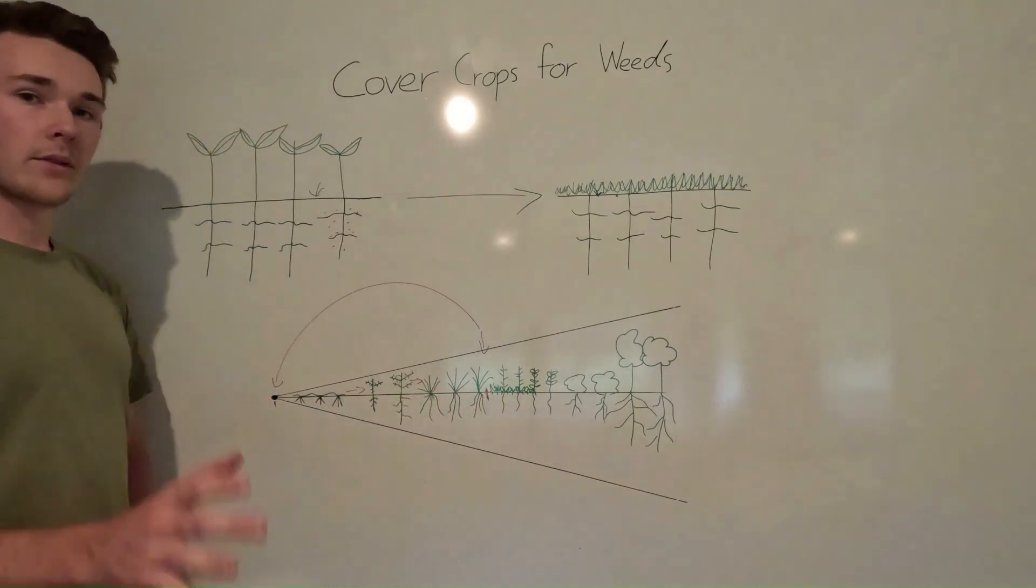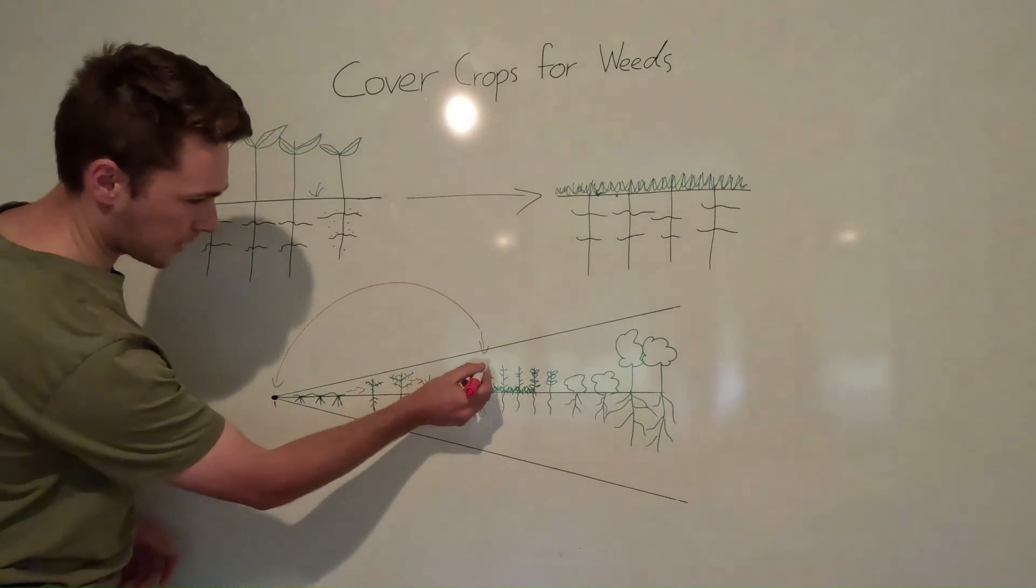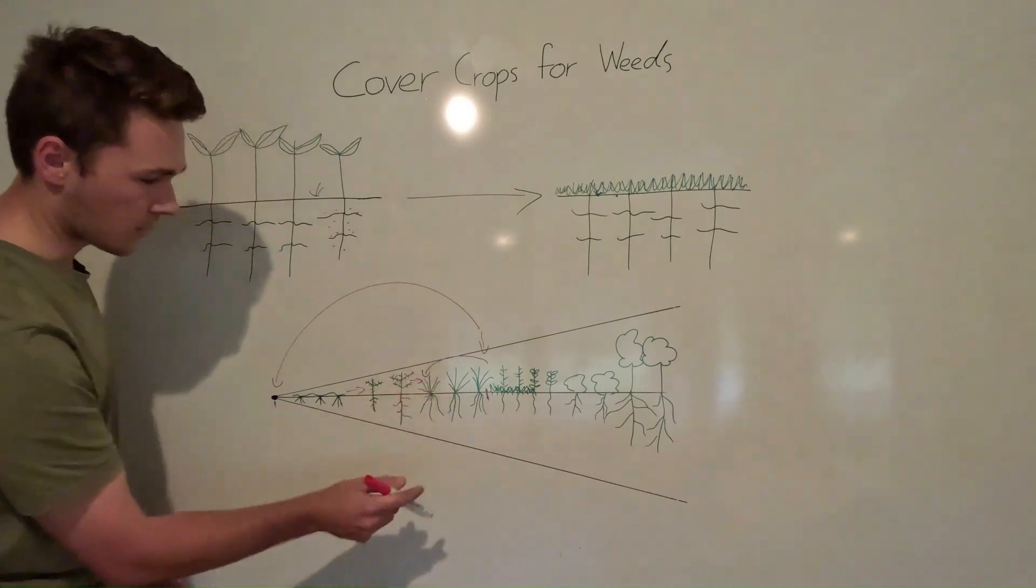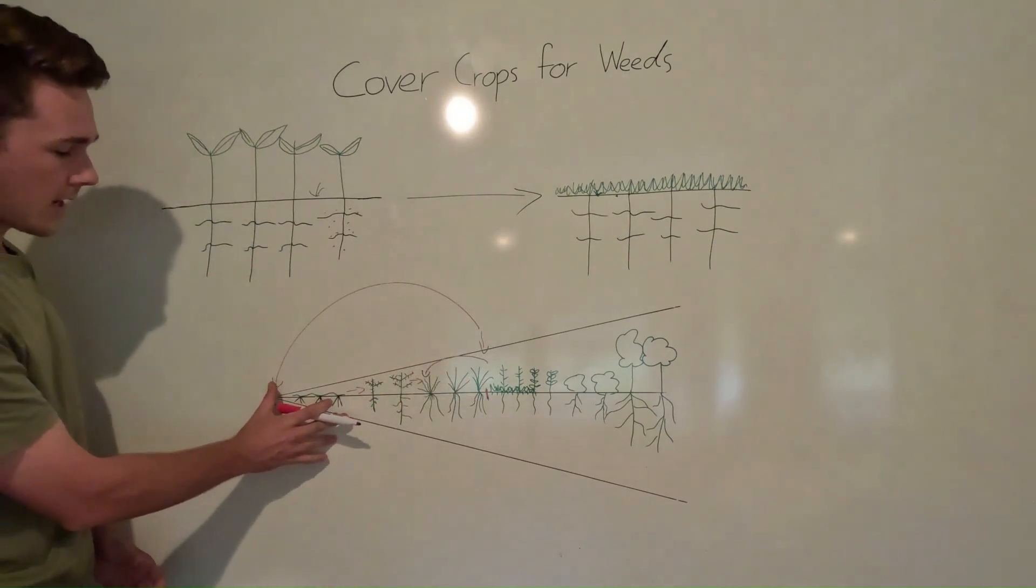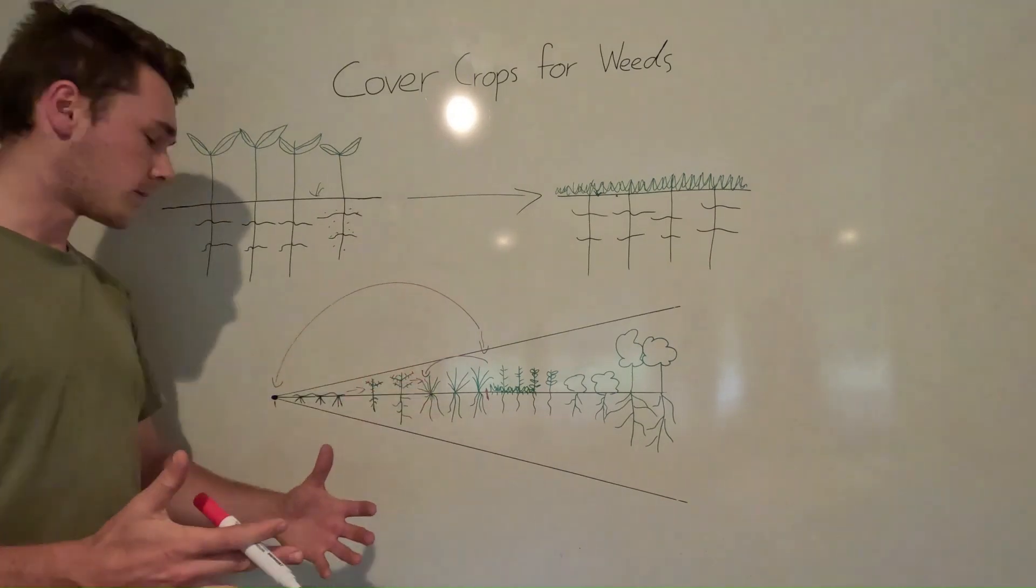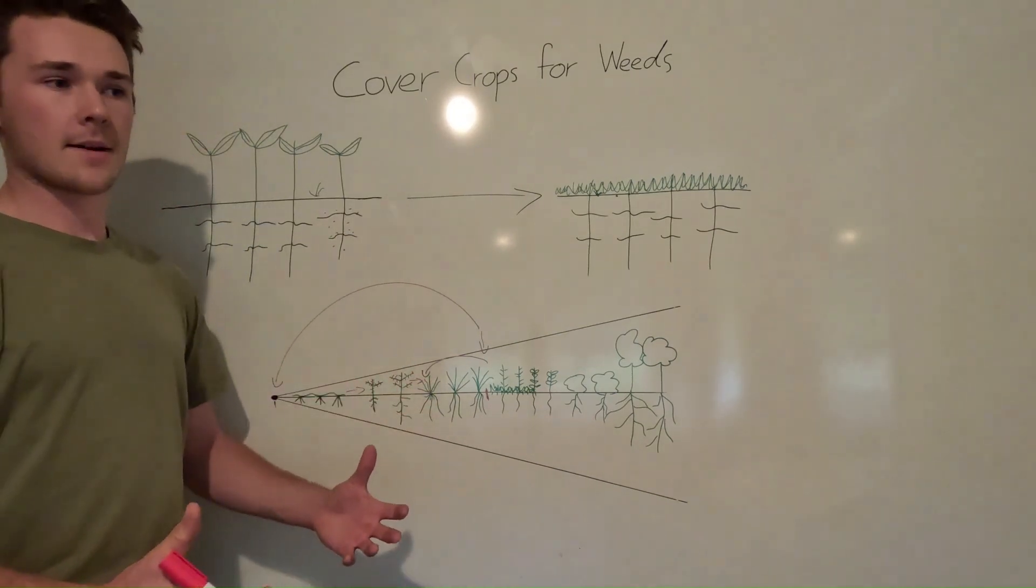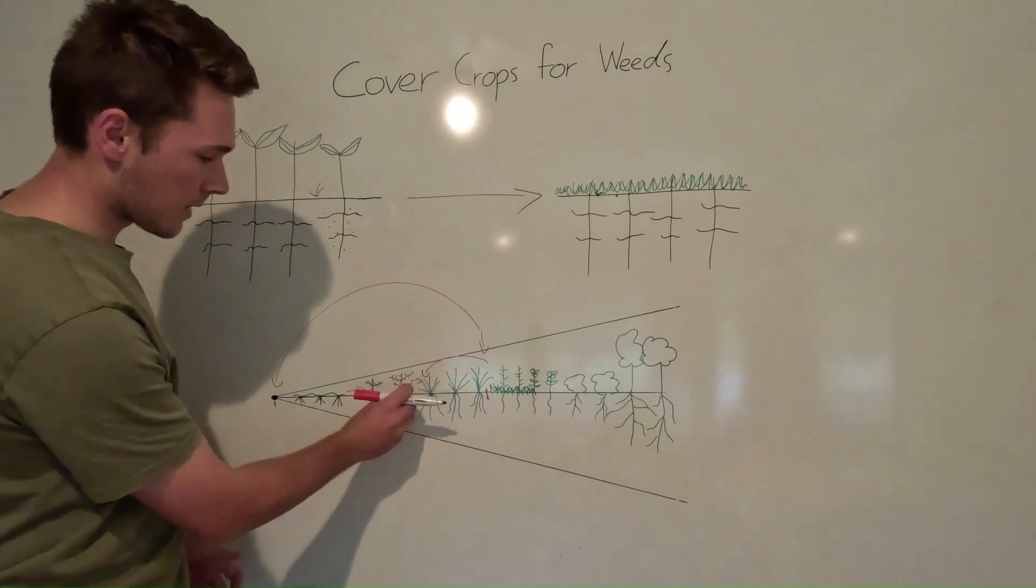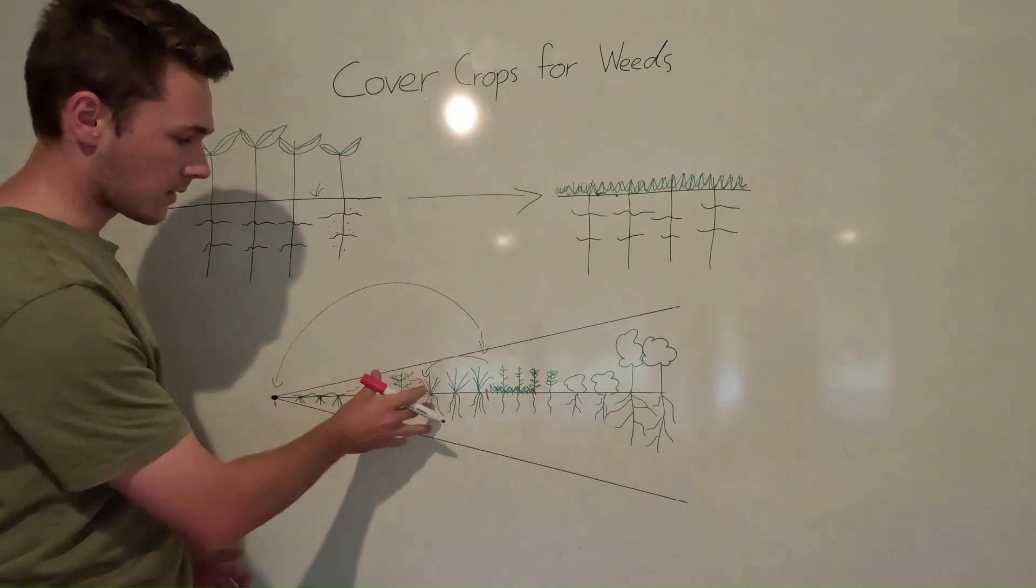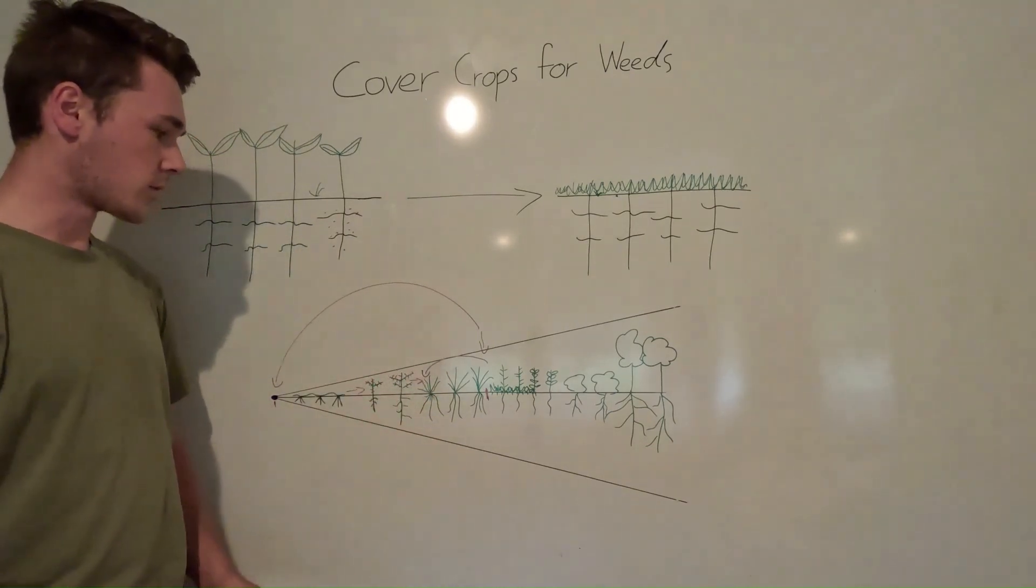What cover cropping does is instead of going all the way back to here, we simply go back to here. So we still have something grown, which means we're not going to get any of these plants which are only there to cover the ground. We're not going to get any of thistles, which also serve a similar function. We're going to go back to the still early stages, but more of the covering stage of ecological succession.